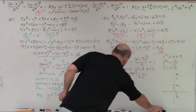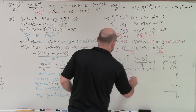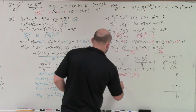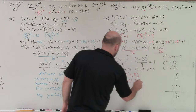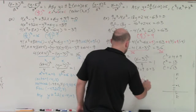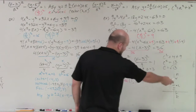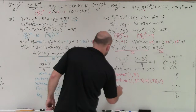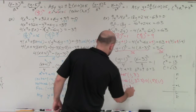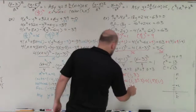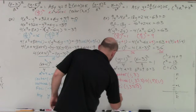The vertices are a distance of a up and down from the center: (1, 3 ± 2), which gives (1, 5) and (1, 1). My foci are also going up and down from the y-coordinate: (1, 3 ± √13). I can't simplify that, so I'll leave it in that form.